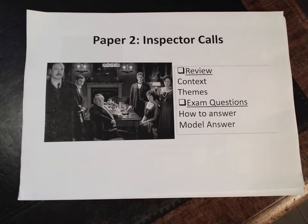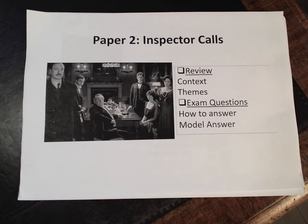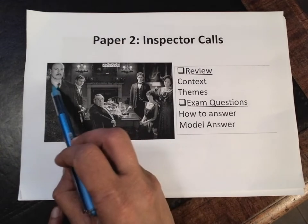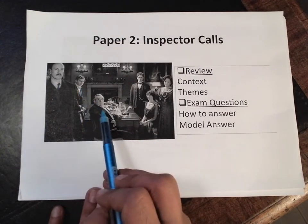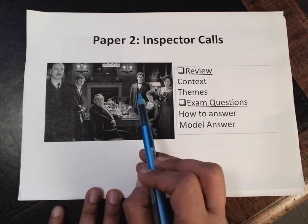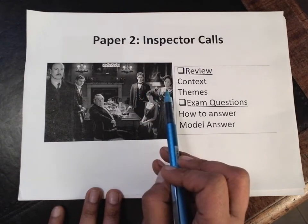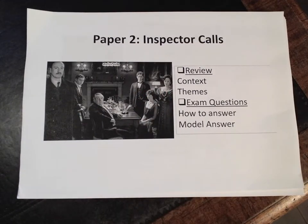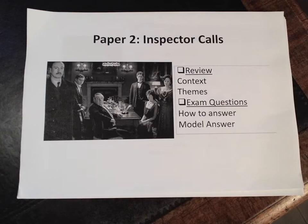This is an image from the recent BBC adaptation of the play — I think it's quite good, even though in my heart I do really like the old black and white version too. Here it's good to see the Inspector, Eric, Mr. Burling, Sheila, her fiancé Gerald, and Mrs. Burling. The character who's missing is Eva Smith — she never shows up in the play, though she's discussed a lot. In the movie version she is shown and dramatized, she does get a voice, but crucially in Priestley's play she doesn't.